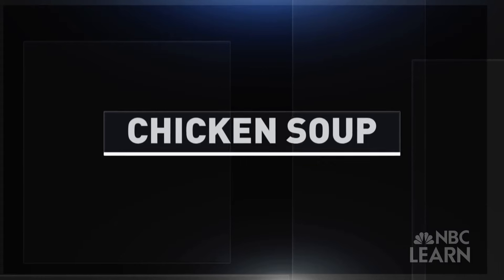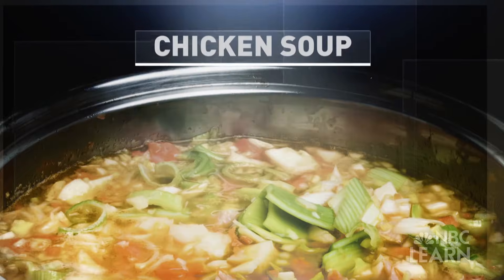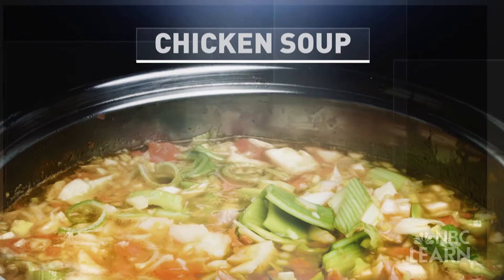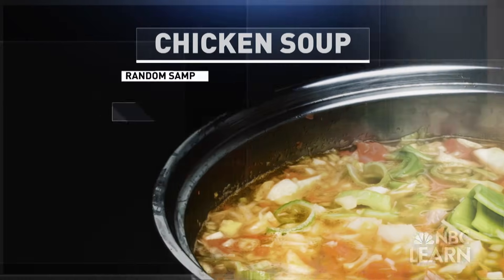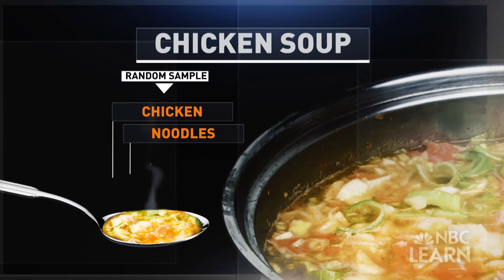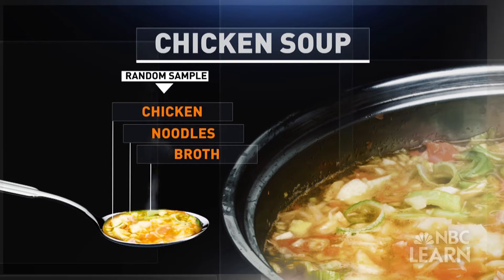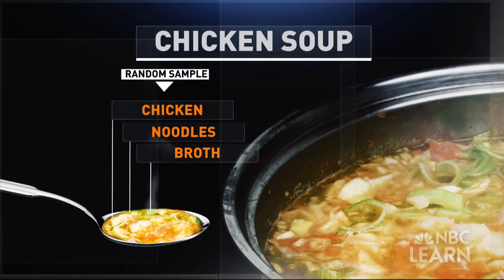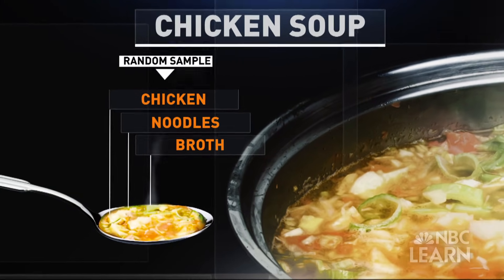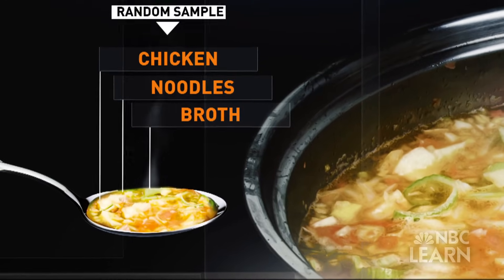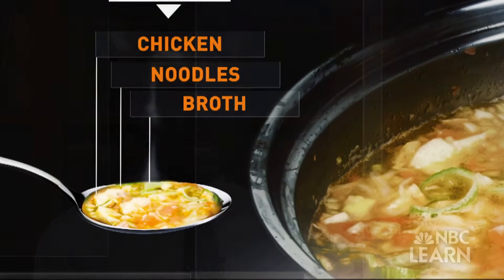Back to the soup analogy: if you're cooking chicken soup, you want your sample to include the ingredients — such as chicken, noodles, and broth — in the same proportions as the overall soup. We want to make sure that the sample has the population characteristics that are demonstrated in the larger population to which we want to make an inference.